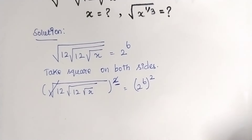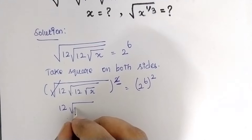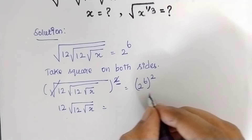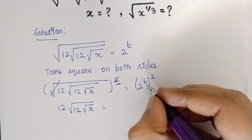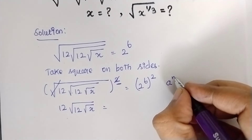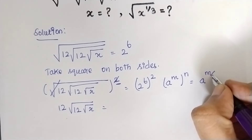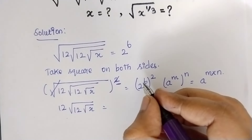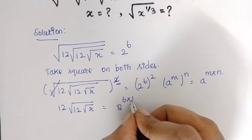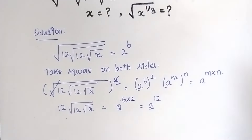What we have here is 12 times the square root of 12x, which is equal to — by seeing it, we might know it is in the form of (a^m)^n = a^(m×n). Therefore this becomes 2^6 times 2, which is equal to 2^12.